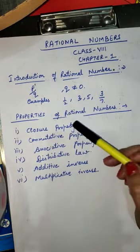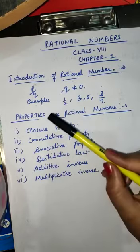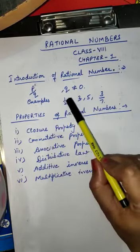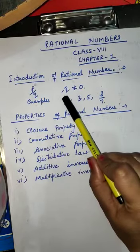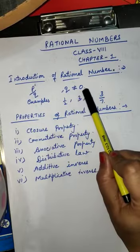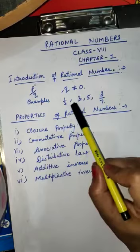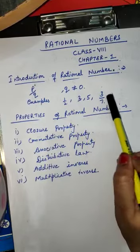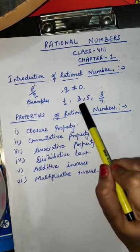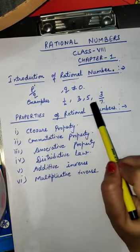Those numbers which can be written in the form of P upon Q — that means numerator upon denominator — are called rational numbers. But the condition is that the denominator should never be equal to 0. For example, 1 by 2, 3 by 7. Yes, 3 and 5 are also rational numbers, because 3 can be written as 3 upon 1, and 5 can be written as 5 upon 1.